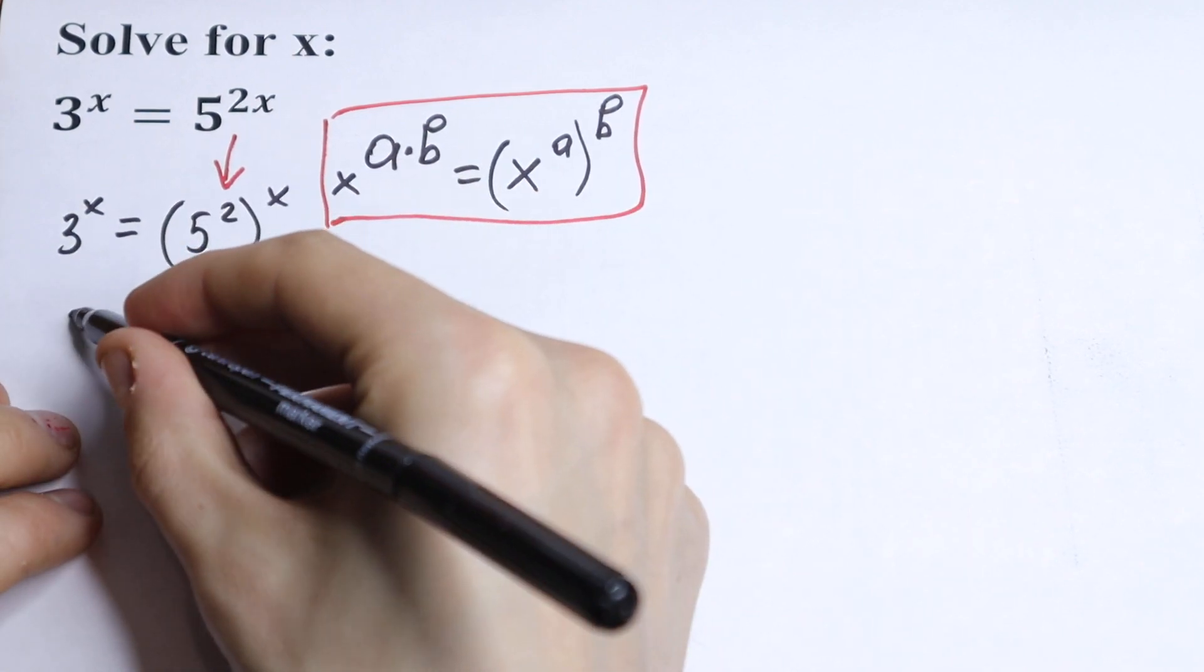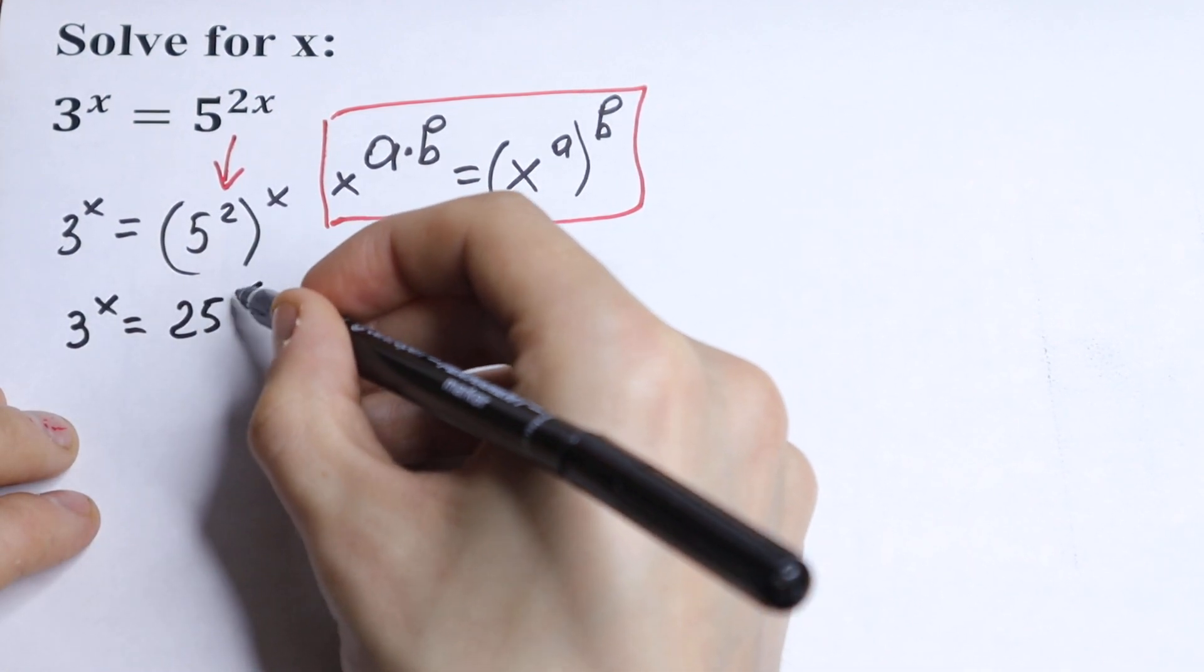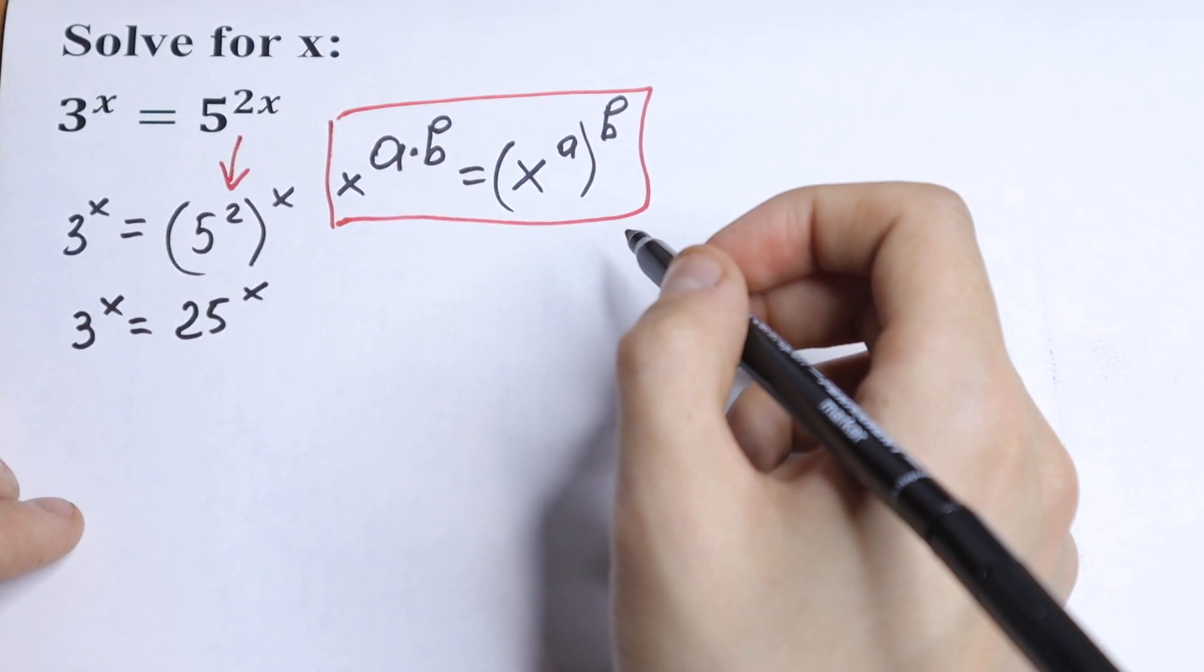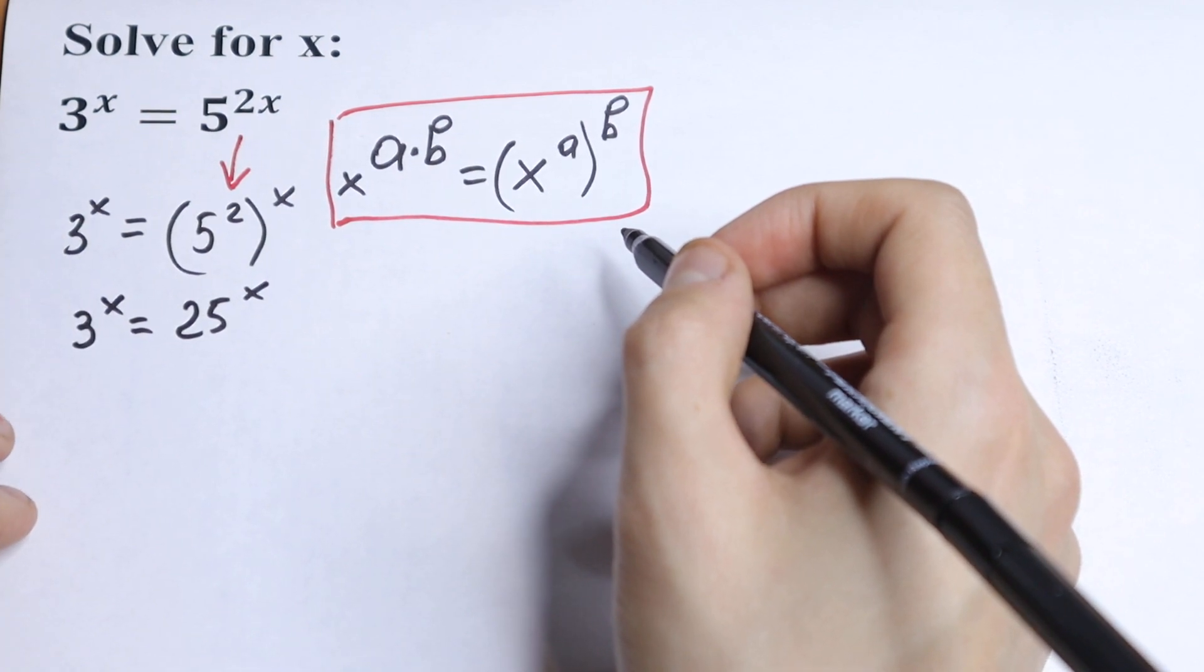So we'll have 3 to the power x equals 5 squared, 25, to the power x. If we have a situation like that, if we have maybe a more complicated equation, we divide both sides by, for example...